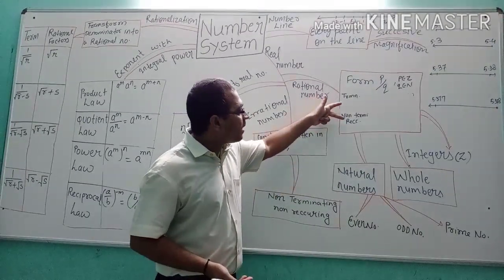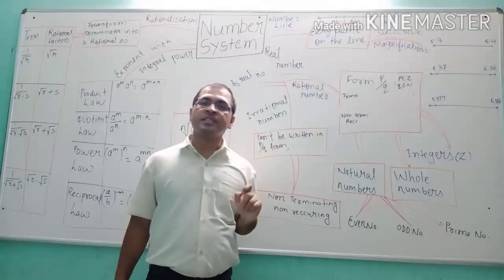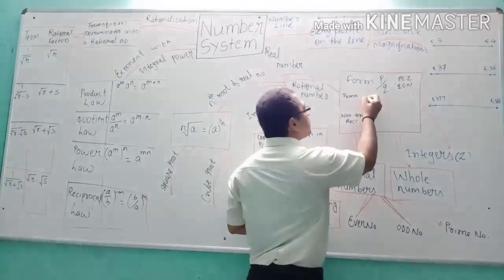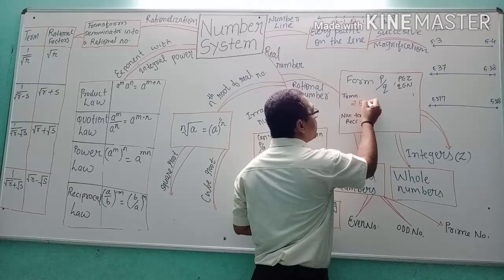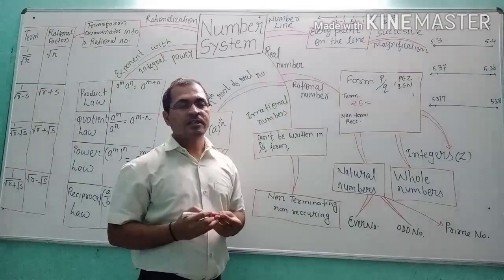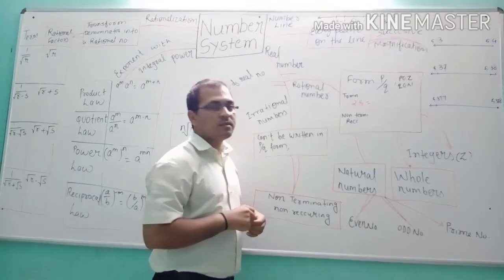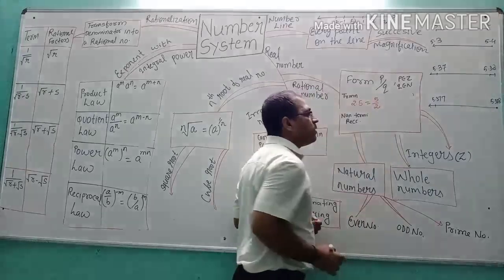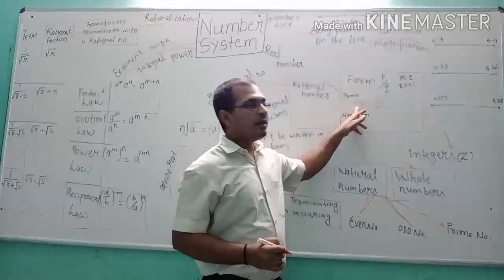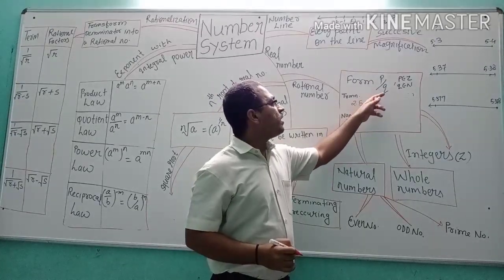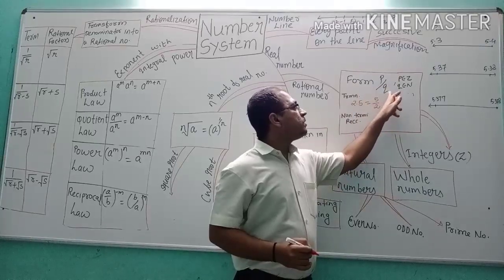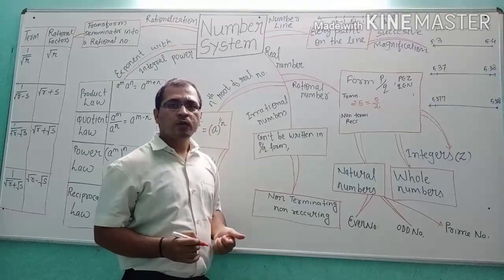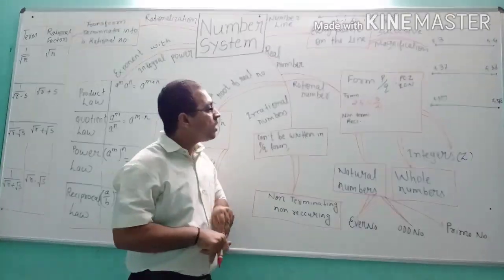For example, 2.5 is a rational number because 2.5 can be written as 5 by 2, where 5 belongs to p and 2 belongs to q. So 2.5 is a terminating decimal expression and also a rational number.